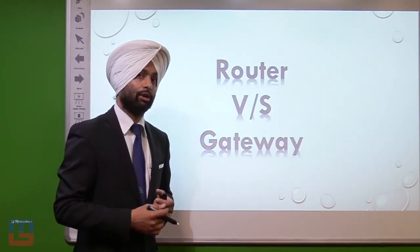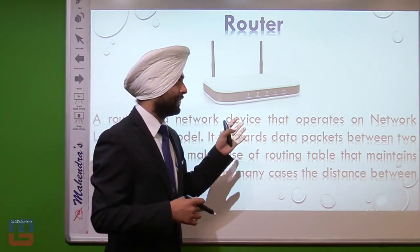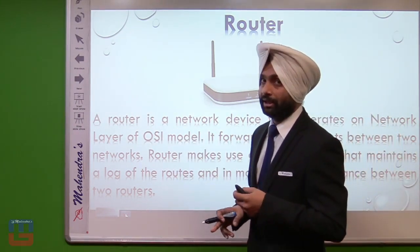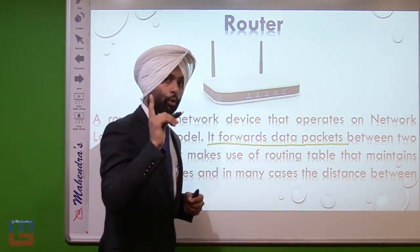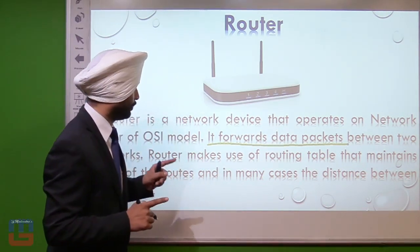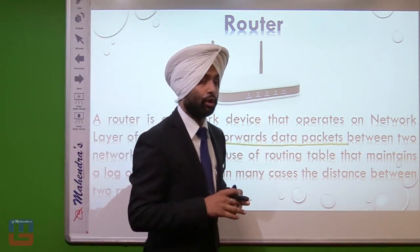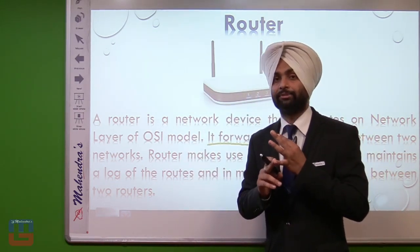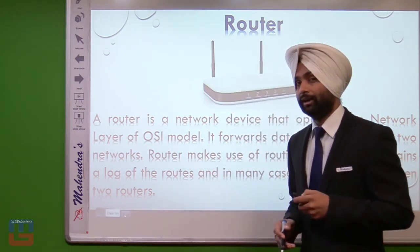The next difference is router versus gateway. A router is a network device that operates on the network layer of the OSI model. It forwards data packets between two networks. Routers also make use of a routing table — a log maintained by the router that keeps a record of the routes connected to it and sometimes the distance of those routes.